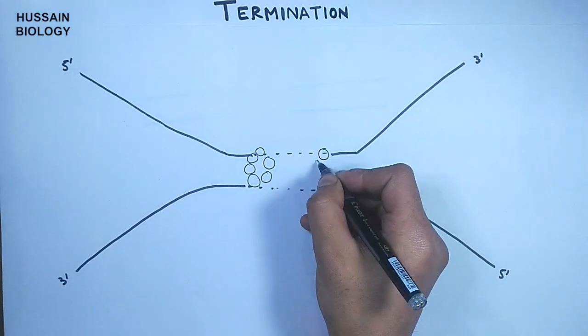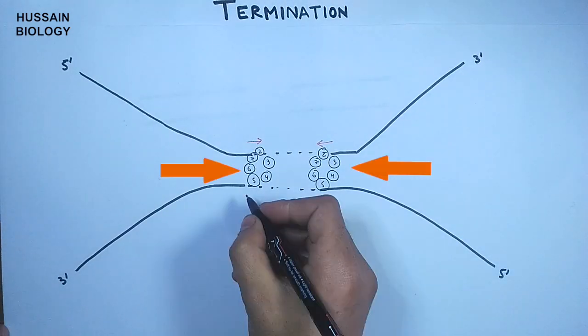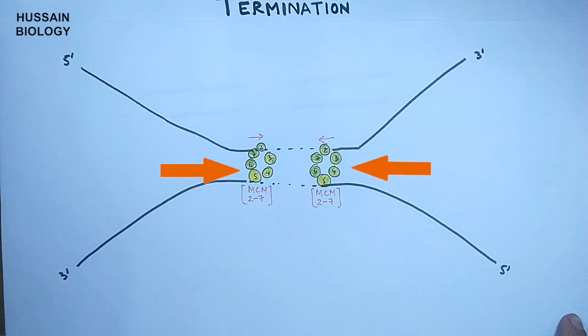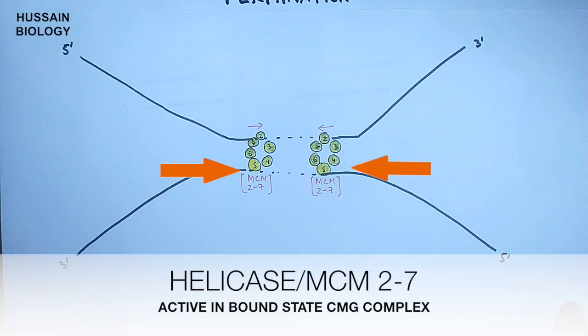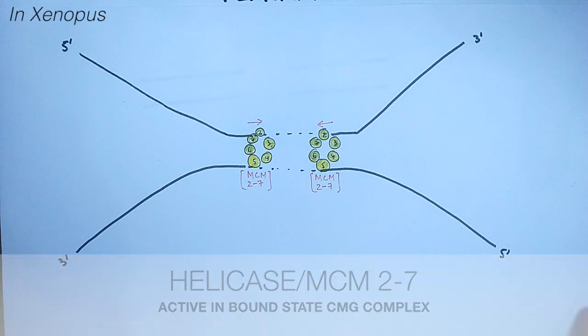In this diagram you can see the MCM complex, that is the helicase in eukaryotes. With this helicase, there are other proteins associated with it in the form of CMG complex, which we have not shown here in this diagram because we have to deal with MCM complex mostly for the termination of replication.